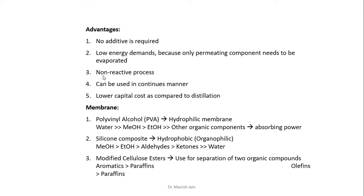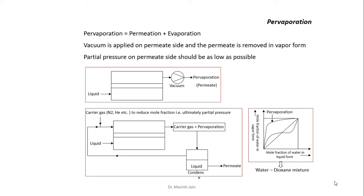Third is the non-reactive process. If we use a reactive process to separate a compound from a mixture, that compound will be destroyed due to the reaction. But pervaporation is a physical process — you have two different output streams, where one species selectively diffuses out through the membrane. You have a higher concentration of one species on the permeate side and a higher concentration of the other species on the retentate side.